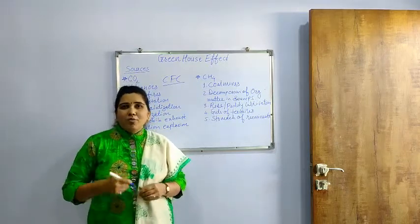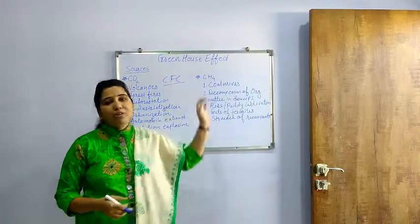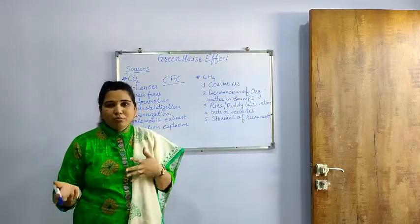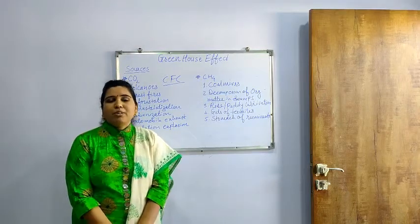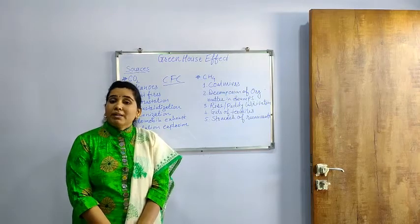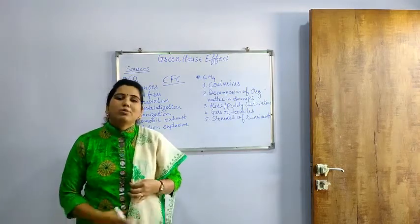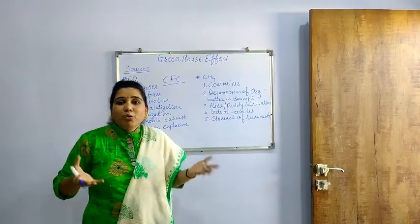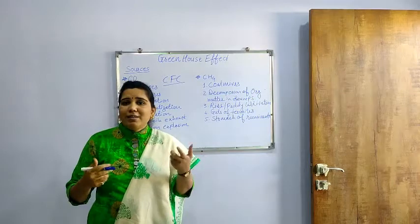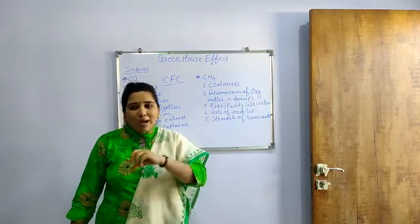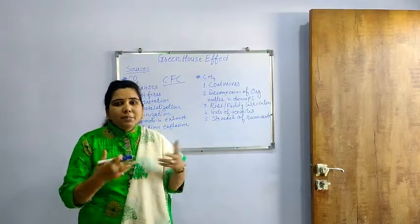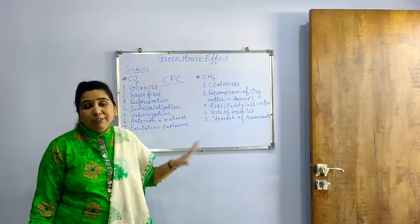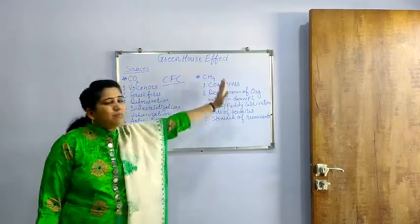The last greenhouse gas is water vapor. Whenever there is an increase in temperature caused by all these gases, and whenever there is a forest fire, a maximum amount of carbon dioxide is released. During the burning of organic matter, a maximum amount of water vapor is also released into the atmosphere, which is harmful as it further increases temperature. By increasing temperature, there is more and more evaporation of the oceans, which adds more water vapor to the atmosphere. In this way, these gases are interdependent on each other. These are the four important greenhouse gases: carbon dioxide, chlorofluorocarbon, methane, and water vapor.